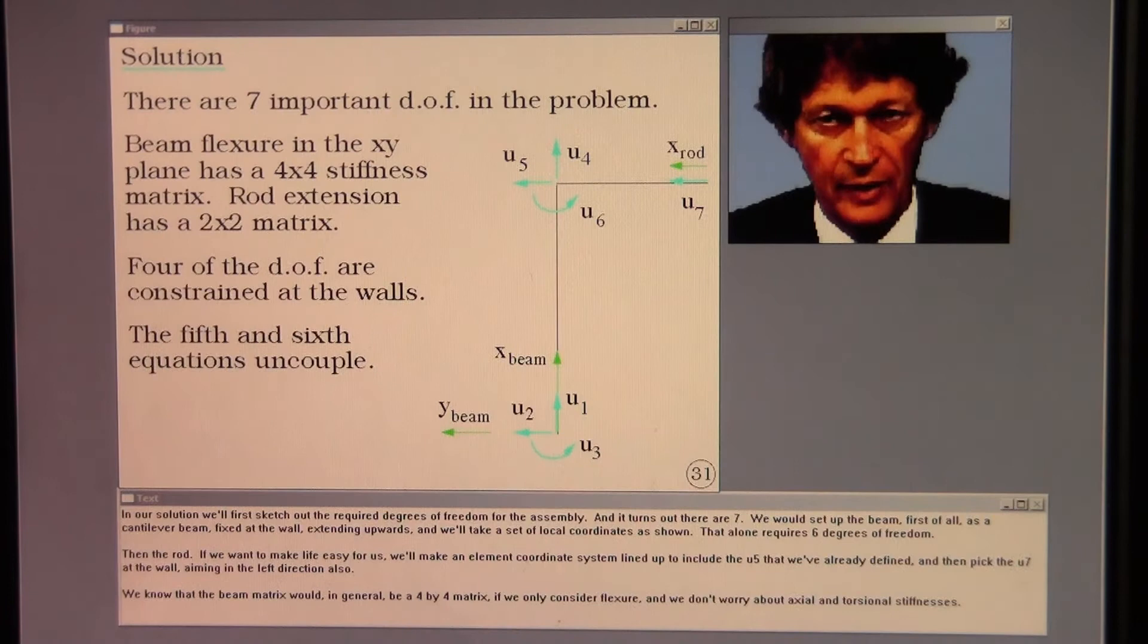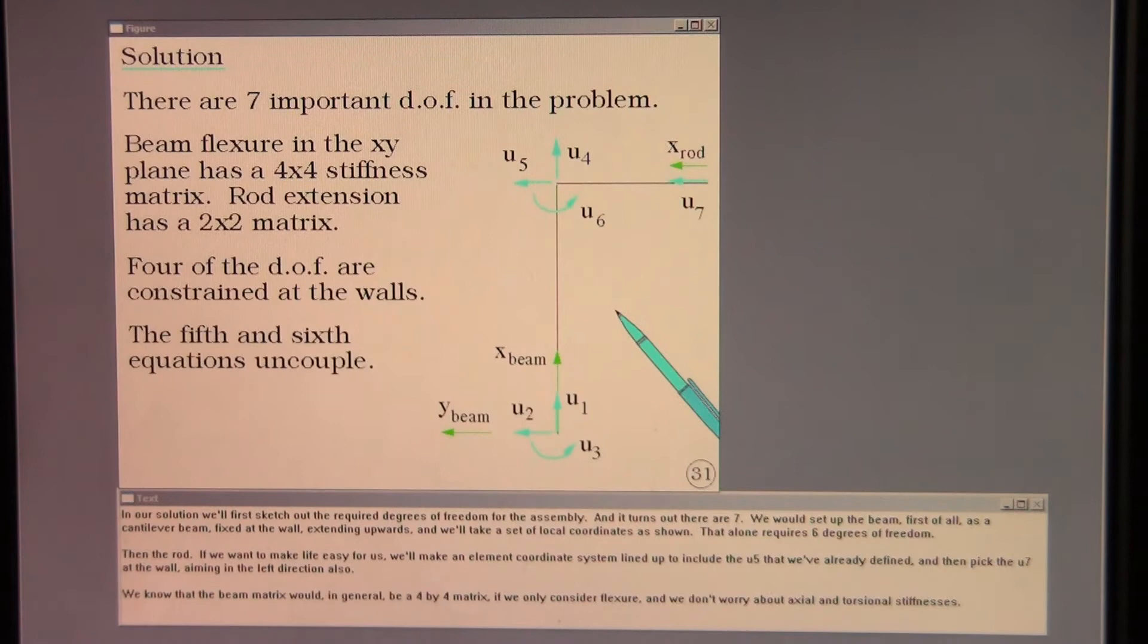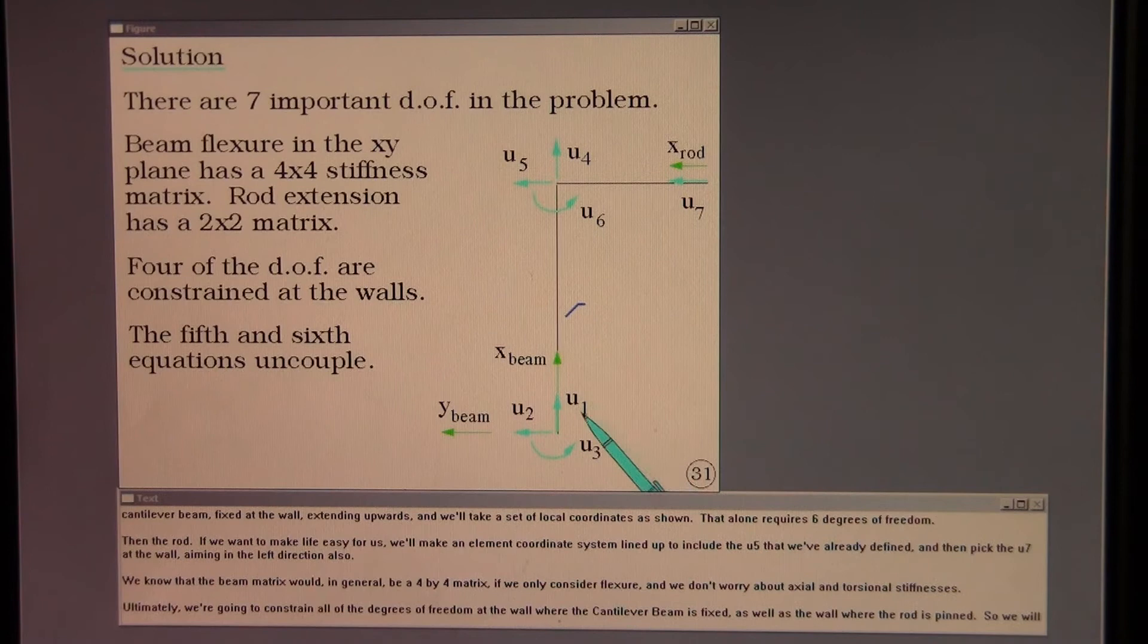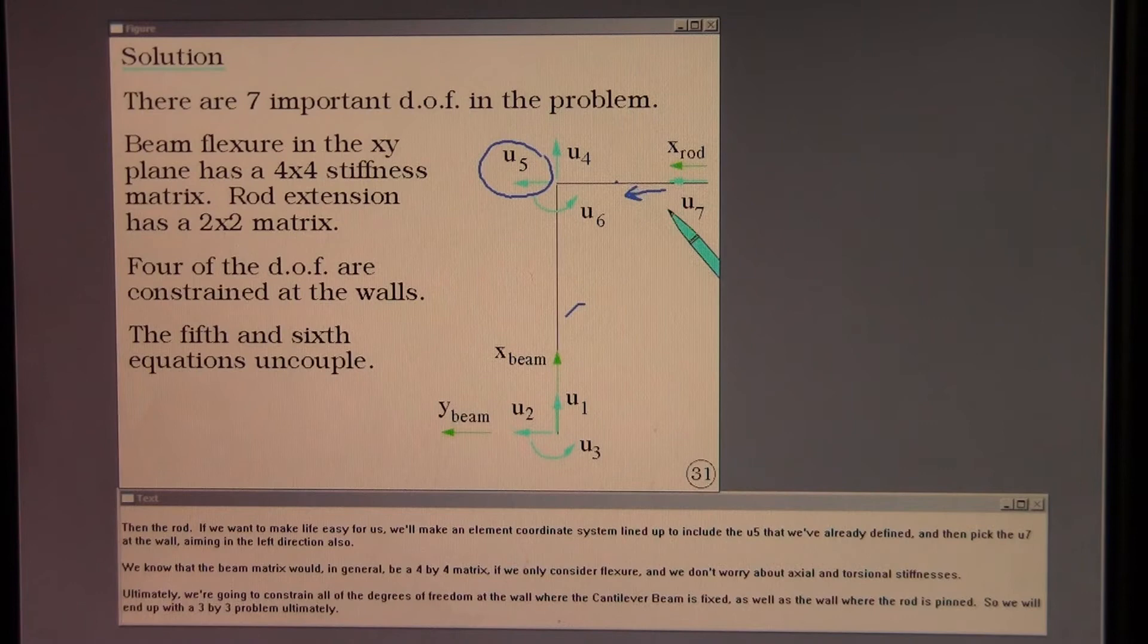In our solution we'll first sketch out the required degrees of freedom for the assembly. And it turns out there are seven. We would set up the beam first of all as a cantilever beam fixed at the wall extending upwards and we'll take a set of local coordinates as shown. That alone requires six degrees of freedom. Then the rod, if we want to make life easy for us, we'll make an element coordinate system lined up to include the U5 that we've already defined and then pick a U7 at the wall aiming in the left direction also.